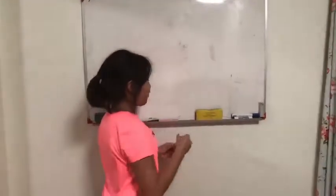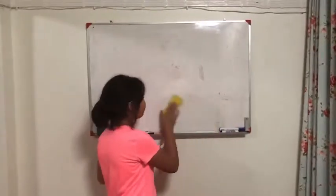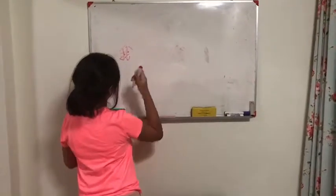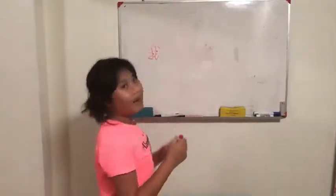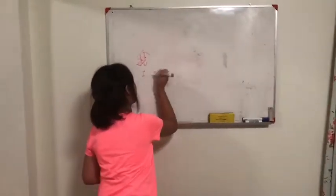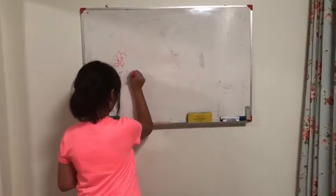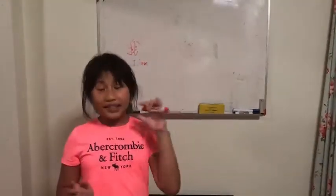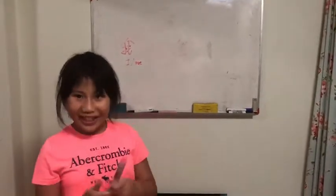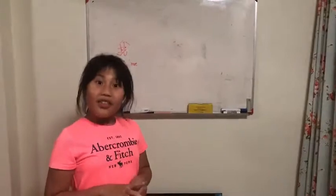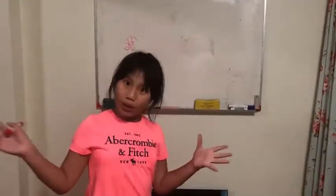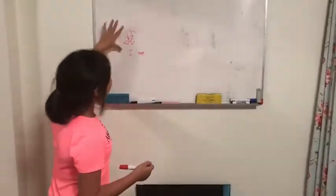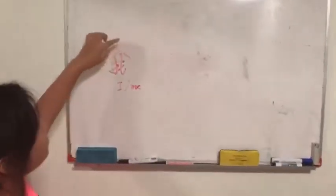Next word is... 我. 我 is I — opposite of you, me. 我 looks a little bit hard to recognize, but it's actually really easy to recognize. There are not many words that look like this. So if you just zoom in to this word, it looks like this.